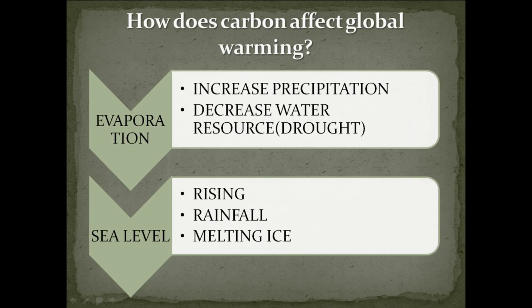How does carbon affect global warming? Carbon pollution has influenced the evaporation process. This can be seen where in one part of the world the precipitation amount has increased, meanwhile on the other half the water resource has reduced, and this has caused drought.